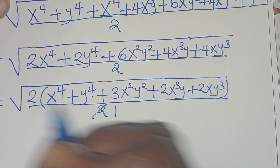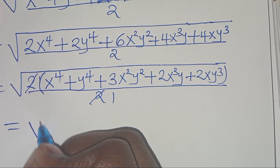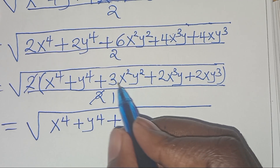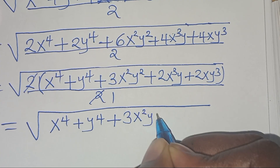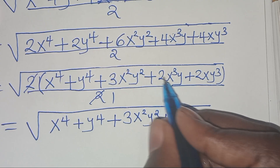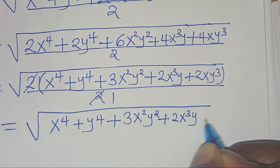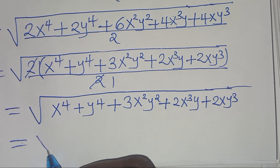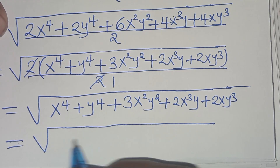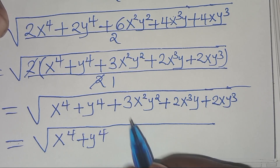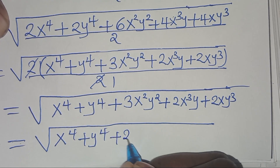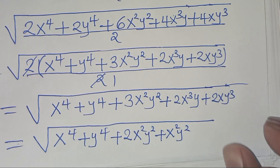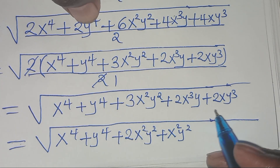Let's simplify by canceling the 2, so that now here we have the square root of x to power 4 plus y to power 4 plus 3x squared y squared, then plus 2x to power 3 y, then plus 2xy to power 3. Here again we have the square root of x to power 4 plus y to power 4; we can express 3x squared y squared as 2x squared y squared plus x squared y squared.